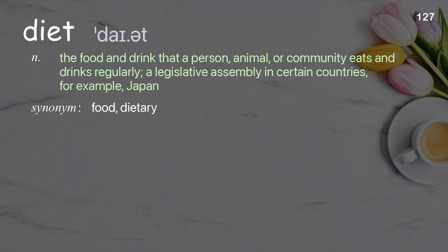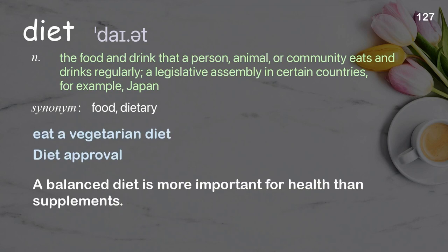Diet: the food and drink that a person, animal, or community eats and drinks regularly; also, a legislative assembly in certain countries, for example Japan. Examples: Eat a vegetarian diet. Diet approval. A balanced diet is more important for health than supplements.